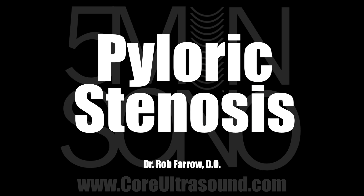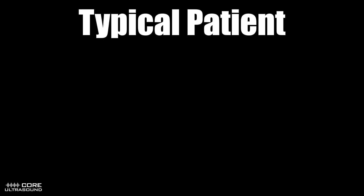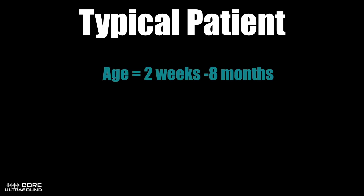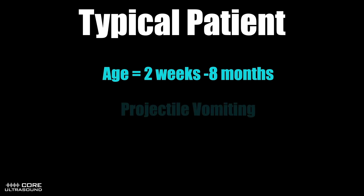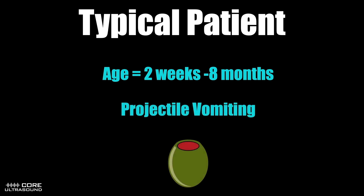Before we get too far into the topic, let's take a second and think about the typical patient. They will likely range anywhere from two weeks to eight months of age, although overwhelmingly most cases of pyloric stenosis occur between three weeks and six weeks of age. Additionally, from the history, the parents may report frequent episodes of vomiting, potentially projectile vomiting, and on examination, you may feel an olive-like mass, which would be concerning for a hypertrophied pylorus.